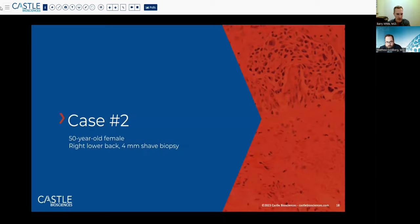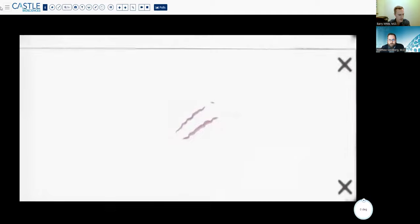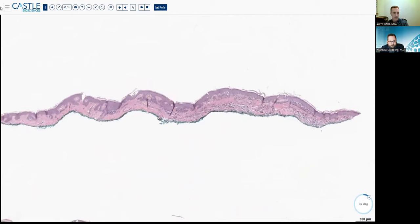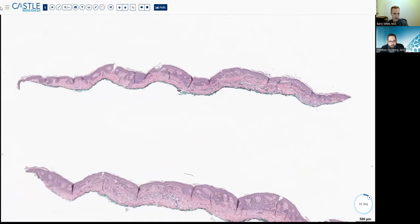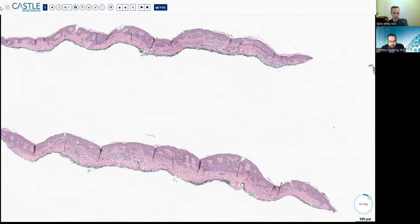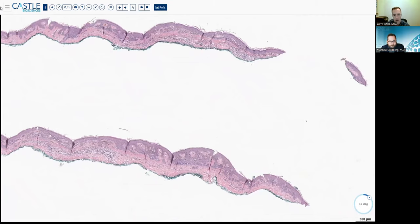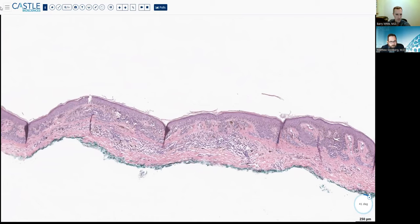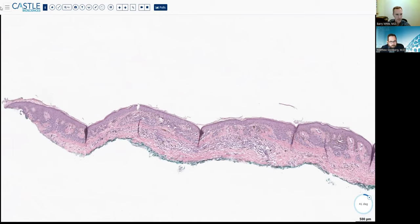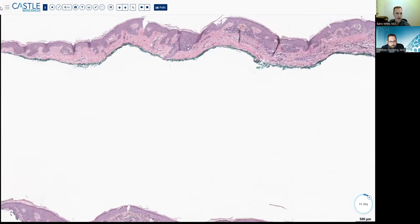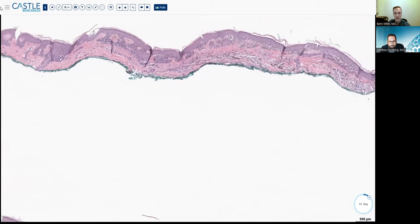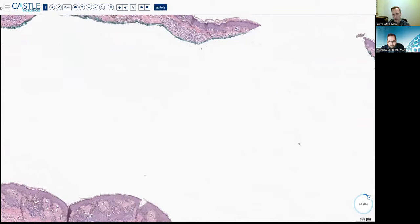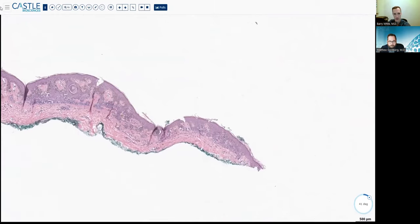Our second case, this is another shave biopsy taken from a 50-year-old female in the right lower back. So we're dealing with a fairly broad lesion here, really filling and going all the way edge to edge of most of these shave biopsy. Higher power, you can see some bridging of nests. There's an inflammatory infiltrate associated with this too, so much that I'm wondering, is this some sort of immune response to something a little more sinister than just a dysplastic nevus?